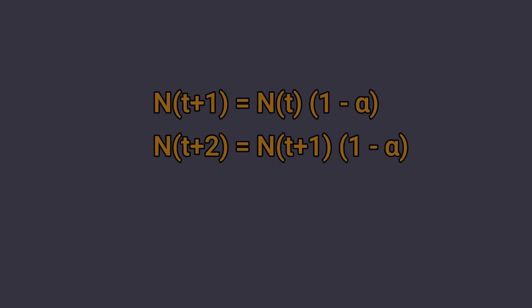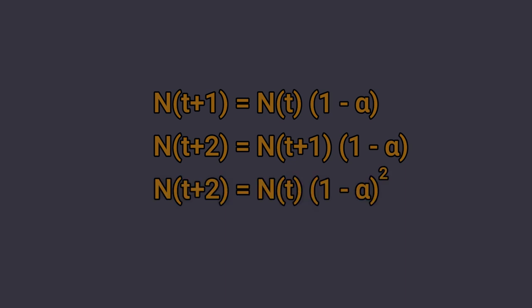But thanks to the previous formula we can substitute N(t+1), obtaining the population at period t multiplied by (1 minus alpha) raised to the second power. In general we can substitute 2 with any integer N. Thus if we know the initial number of creatures N zero, we know the population decreases exponentially.